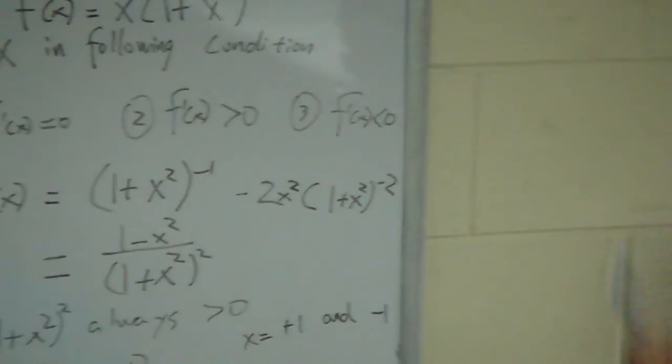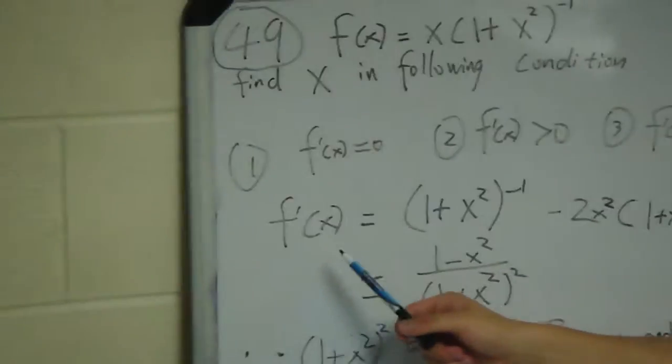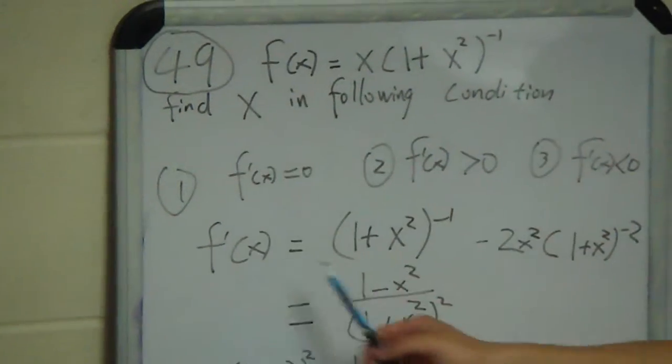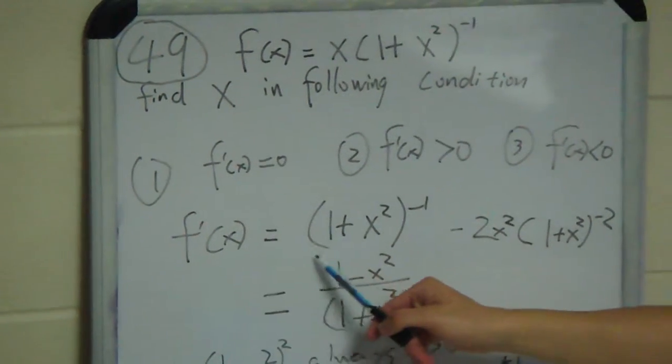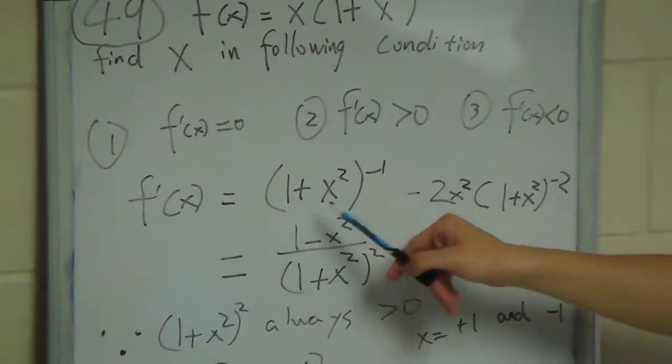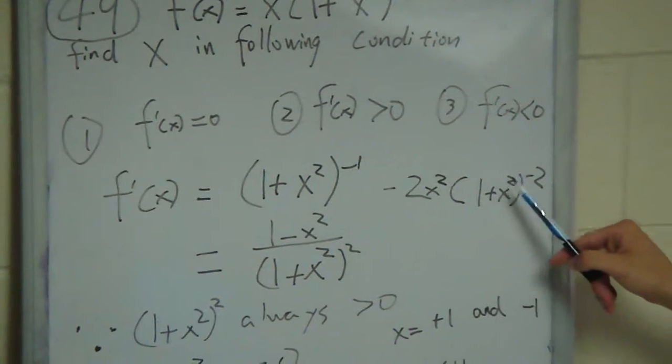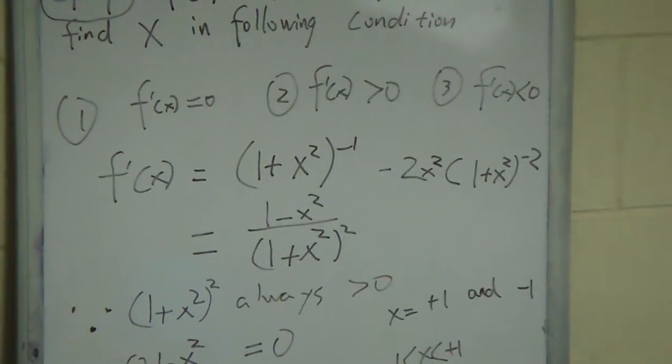So basically what I did here is I took the derivative of this function, and I get f'(x) = (1+x²) - 2x²(1+x²)^(-2).